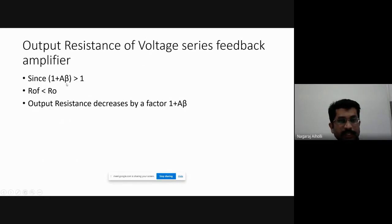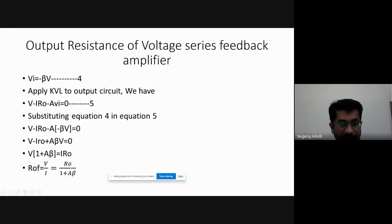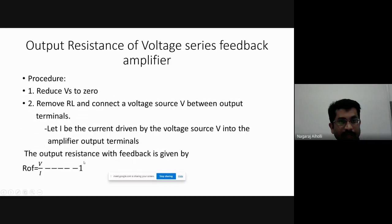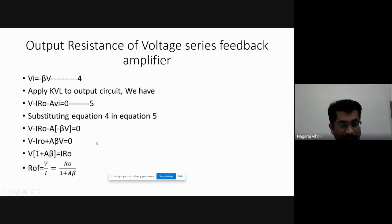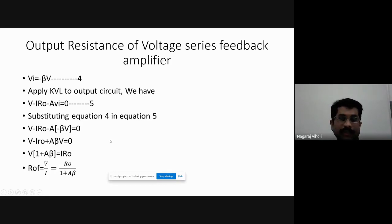Since (1 + A·beta) is greater than 1, ROF will be less than R0. For example, if R0 = 10 and (1 + A·beta) = 2, then ROF = 5, which is less than 10. We conclude that the output resistance decreases by a factor of (1 + A·beta). Output resistance with feedback ROF = R0/(1 + A·beta).